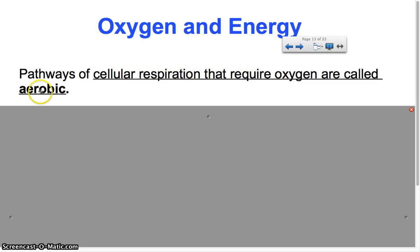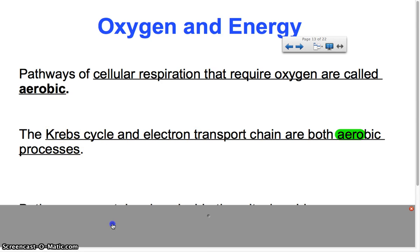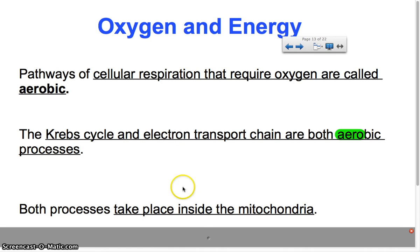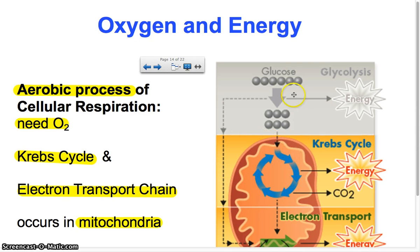Pathways of cellular respiration that require oxygen are called aerobic. 'Aero' means the presence of oxygen, so aerobic means oxygen must be present for the process to occur. The Krebs cycle and the electron transport chain are the two aerobic parts — if you don't have oxygen, these two cannot happen. Both the Krebs cycle and the electron transport chain take place inside the mitochondria, which makes sense because the mitochondria is the powerhouse of the cell and produces that energy.